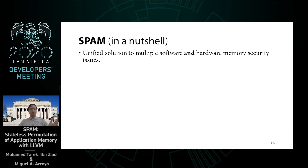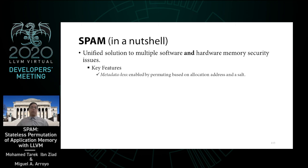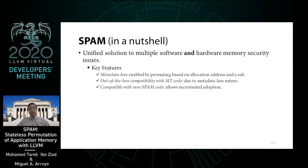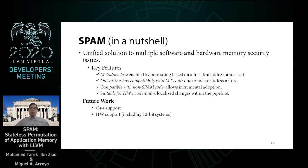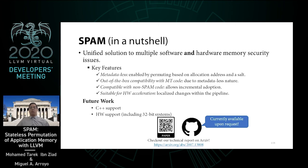This brings us to the end of our talk. Hopefully we have shown how SPAM provides a unified solution to multiple software and hardware memory security issues, how it works without metadata by relying on the allocation address, and how this allows us to support multi-threaded code out of the box. We have also shown how SPAM achieves compatibility with non-SPAM code, potentially easing future adoption, and how there is a path forward to reducing overheads through hardware acceleration. C++ and hardware support are currently in development, so if you are interested in working with us, please reach out. For details we didn't cover, please check out the full technical report on arXiv. Thank you all.